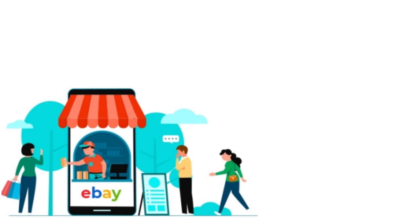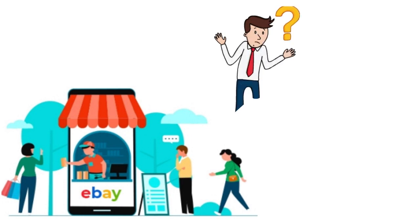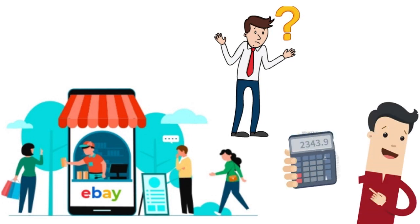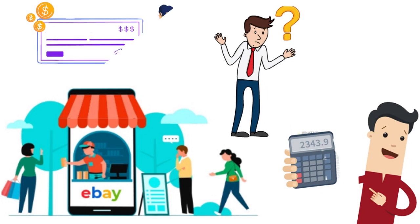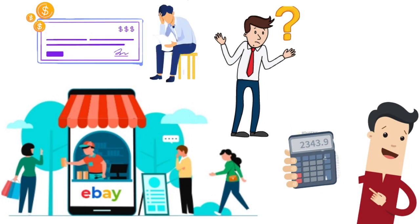What you want to do is determine your break-even — the point at which you are neither losing money nor making money. Calculate how much your minimum profit should be, and then decide what kind of margin you want: 25%, 50%, 75%, or 100%. That's what your pricing should focus on, rather than trying to match what your rival is charging for the same item.